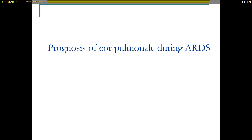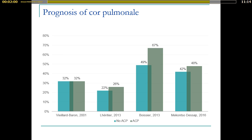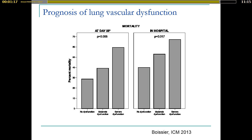The prognosis of cor pulmonale during ARDS is debated. Some authors have reported no change in prognosis, while others report worse prognosis. The difference between studies is probably due to patient management — in some studies, all patients with cor pulmonale were treated with prone positioning to relieve right ventricular afterload. In the largest studies with more than 700 patients, severe cor pulmonale — associated with severe dilatation of the right ventricle — was associated with worse prognosis. There are also signals from indirect markers of lung vascular dysfunction pointing to worse prognosis.